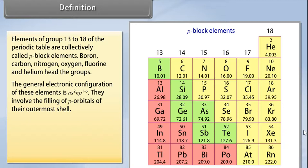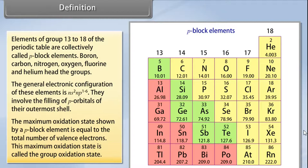The maximum oxidation state shown by a p-block element is equal to the total number of valence electrons. This maximum oxidation state is called the group oxidation state.